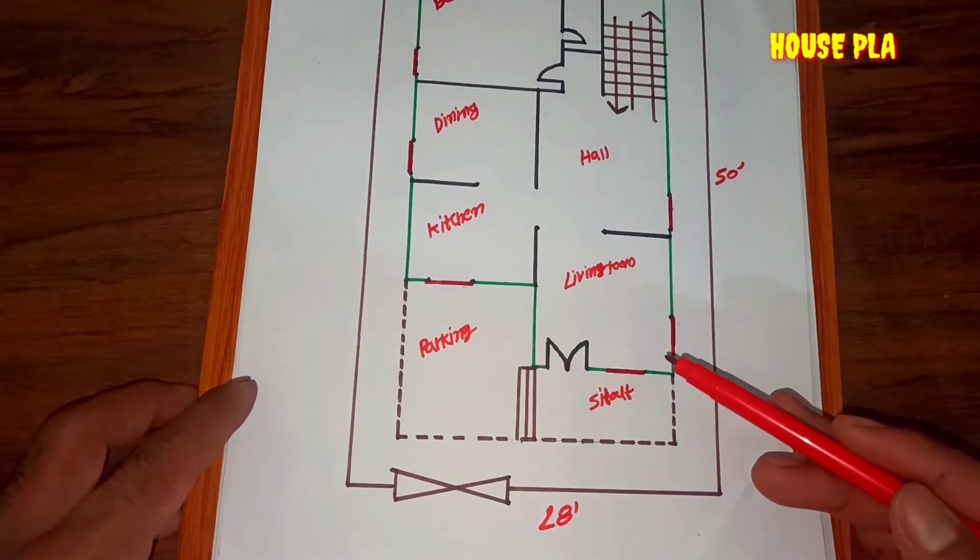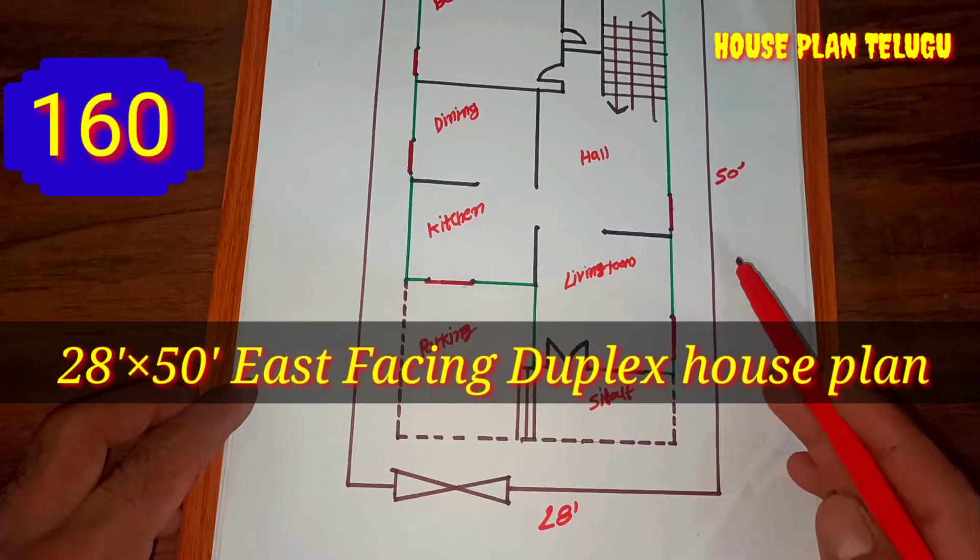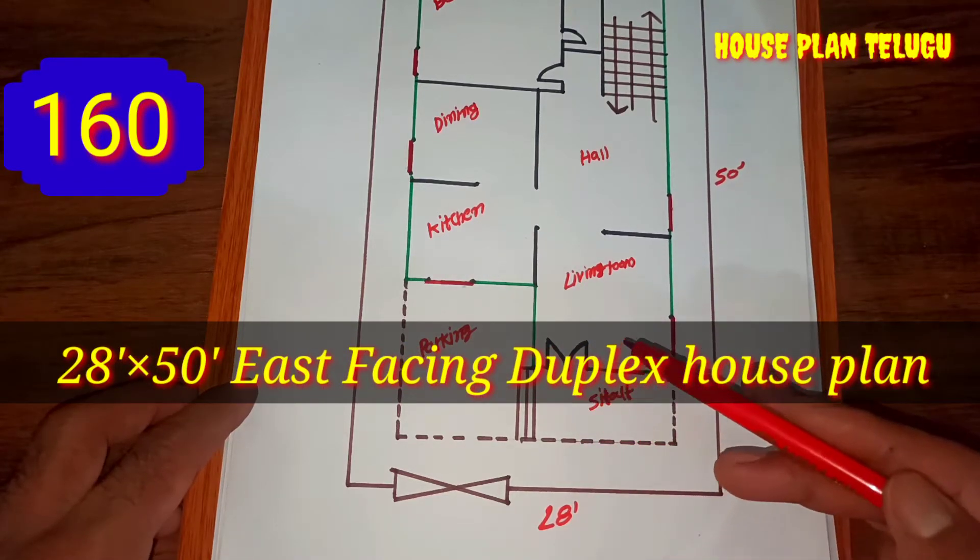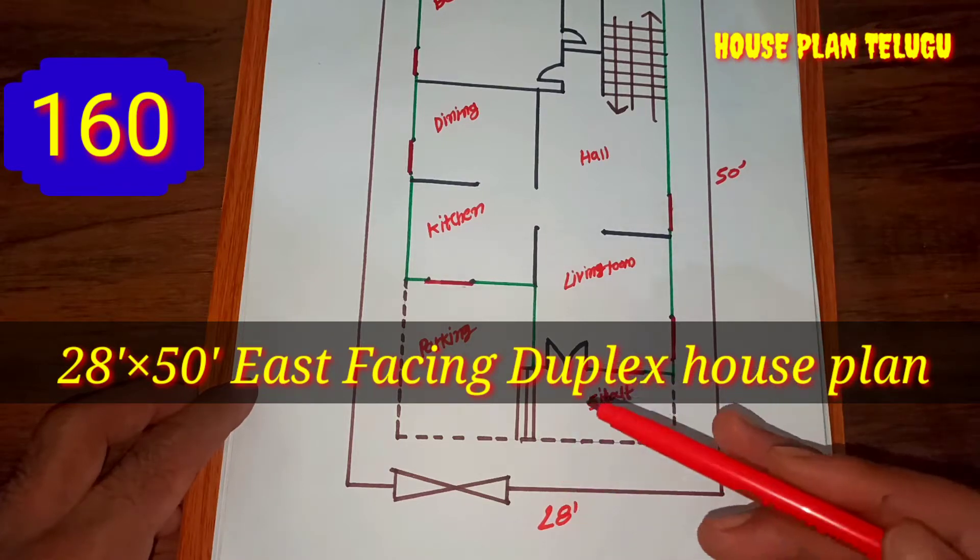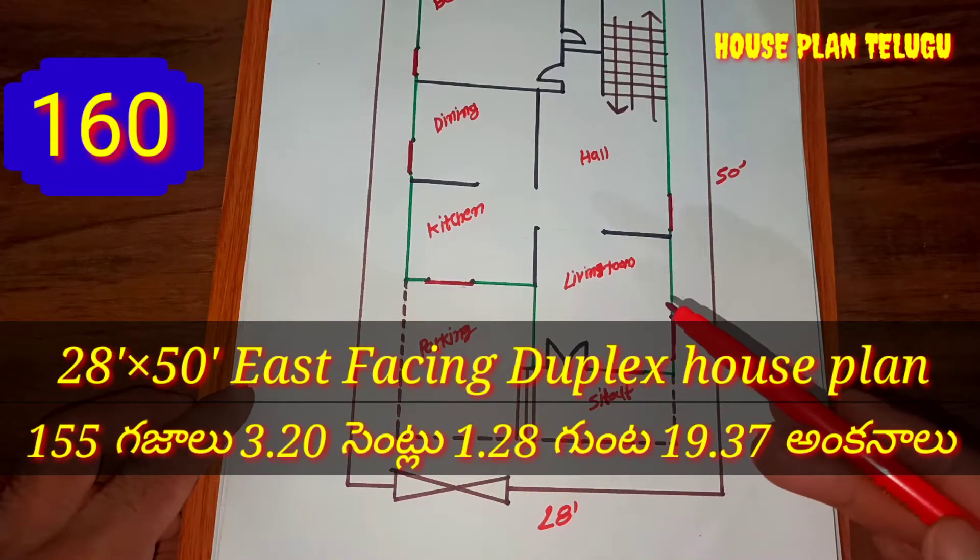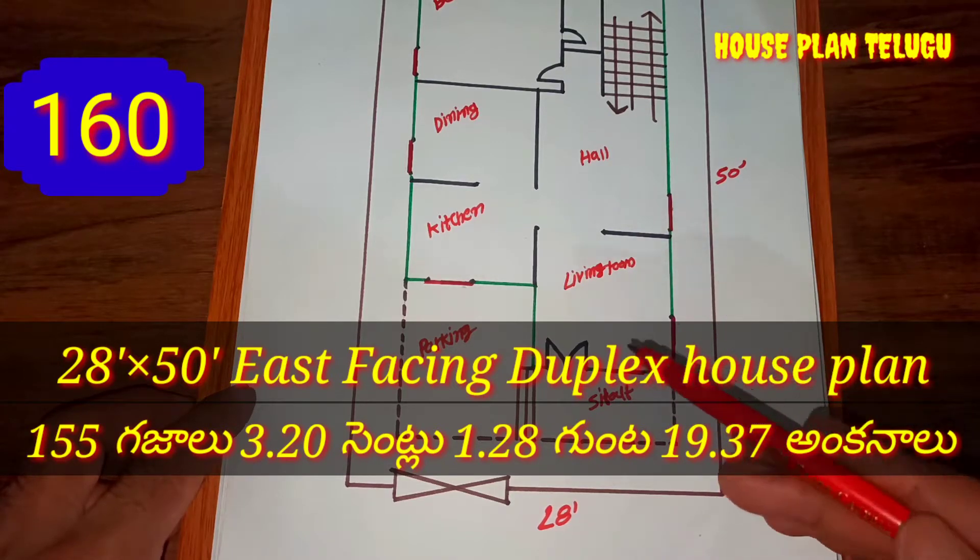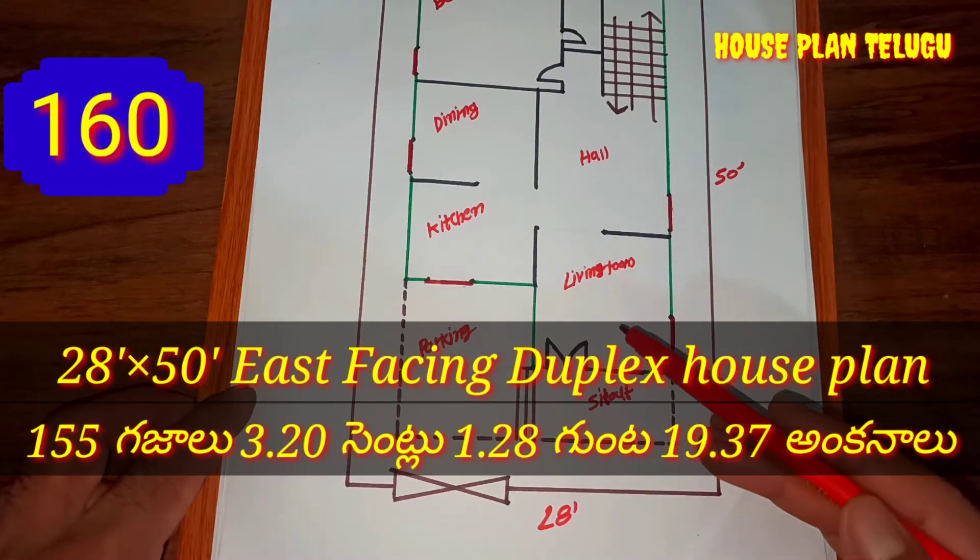Hello friends, this is a plan for 28 feet by 50 feet East facing duplex house. We're working with dimensions of 25 feet, 32 feet, 63 feet, 70 feet, and 105 feet. The top is 14 feet. We are using 10 feet and will provide the details in 12 hours.